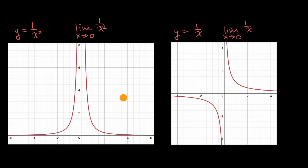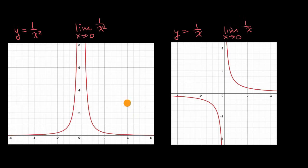In a previous video, we looked at these graphs. This is y equals one over x squared, and this is y equals one over x. We explored what the limit is as x approaches zero in either of those scenarios.